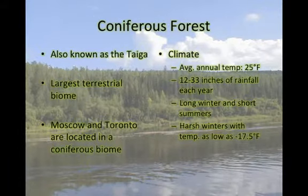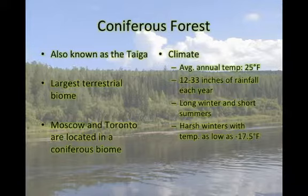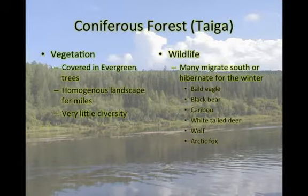The next biome is the coniferous forest biome, which is also known as the taiga biome. The taiga is the largest of the terrestrial biomes. Moscow and Toronto are two major cities located in a coniferous biome. The average annual temperature of the taiga is 25 degrees Fahrenheit. The taiga receives 12 to 33 inches of rainfall each year. A coniferous forest experiences long winters and short summers, with temperatures as low as negative 17 degrees Fahrenheit. The taiga is covered in evergreens and can be homogeneous for miles with very little diversity.